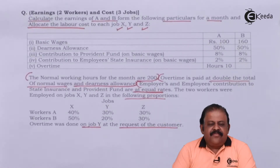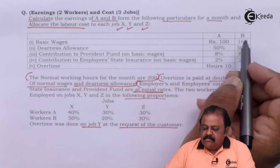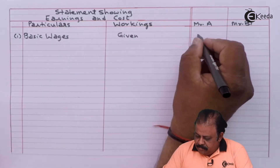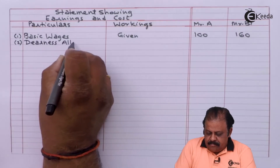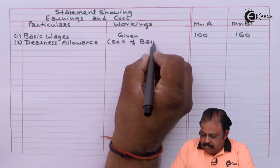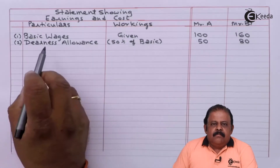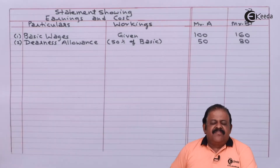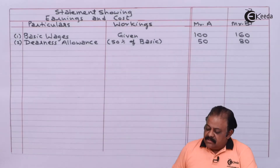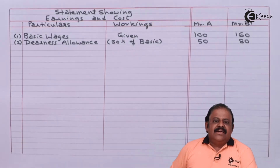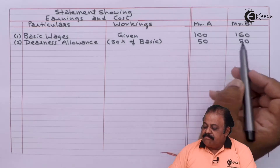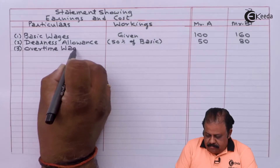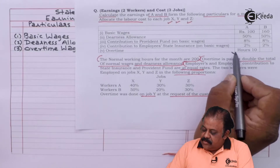Let us calculate wages of Mr. A and B. Basic wages: Mr. A = Rs. 100, Mr. B = Rs. 160. Dearness allowance is given at 50%, so 50% of Rs. 100 = Rs. 50 for Mr. A, and 50% of Rs. 160 = Rs. 80 for Mr. B.